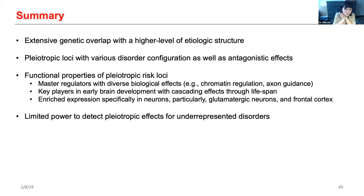In summary, our study indicates there is substantial pairwise genetic correlation between these eight psychiatric disorders. We found evidence that the higher-level genetic structure between multiple psychiatric disorders points to a fair number of broader domains underlying genetic risk to psychopathology. We identified specific risk loci with various disorder configurations as well as ones with opposite directional effects between distinct disorders, and observed functional properties of pleiotropic risk loci — many are master regulators performing diverse biological roles including chromatin regulation, axon guidance, and white matter integrity. They play a key role in early brain development, with heightened expression also apparent throughout the lifespan, enriched specifically in neurons — particularly glutamatergic neurons in the frontal cortex. We note that limited power due to smaller sample sizes constrains our ability to detect pleiotropic effects involving underrepresented disorders.